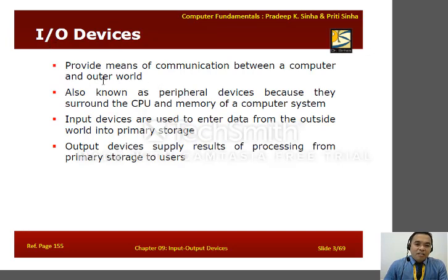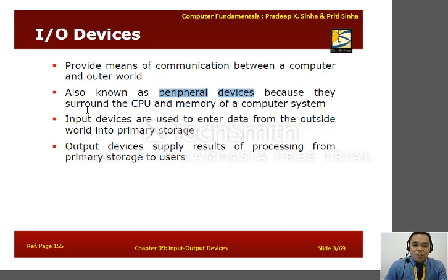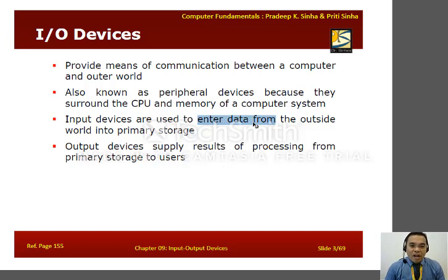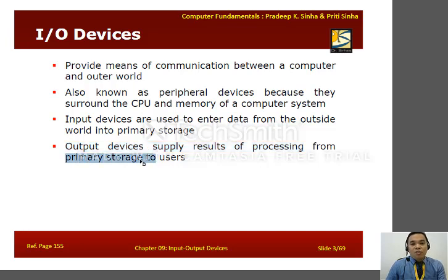What are these I/O devices? These devices provide means of communication between a computer and the outer world. These devices are also known as Peripheral Devices because they surround the CPU and memory of a computer system. Input devices are used to enter data from the computer user, and it will be processed into a machine-readable form and stored in the primary storage. Output devices supply results of processing from primary storage to the users.